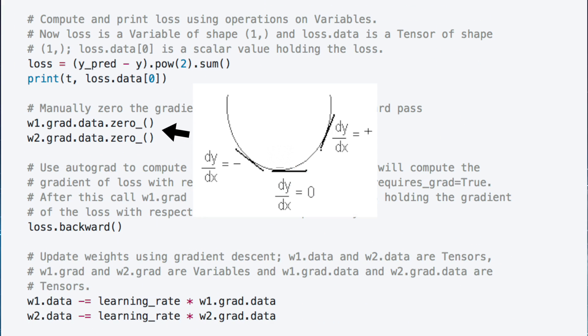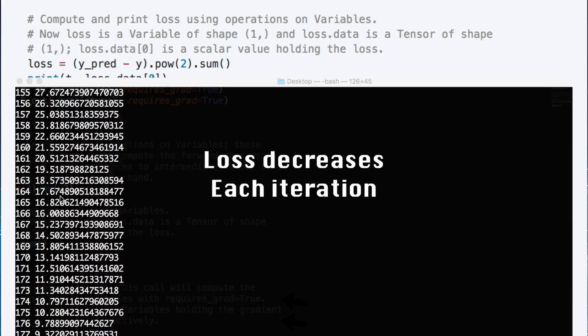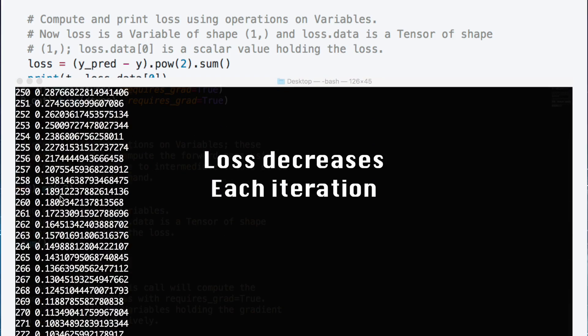Before we perform backpropagation, we need to manually zero the gradients for both sets of weights since the gradient buffers have to be manually reset before fresh gradients are calculated. Then we can run backpropagation by simply calling the backward function on our loss. It will compute the gradient of our loss with respect to all variables we set requires_grad to true for. Then we can update our weights using gradient descent. And our outputs look great.